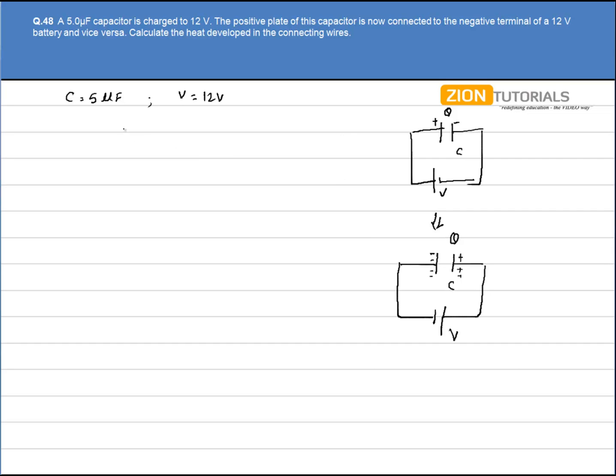So we have to calculate the net charge flow. Initially let's say we have Q charge over here. Now, if I say that in this direction electron flows.